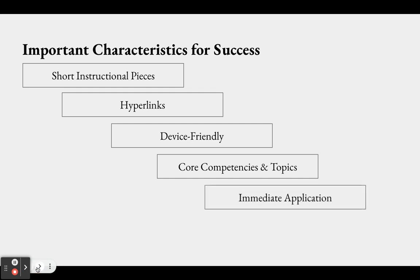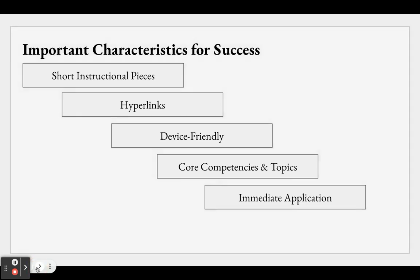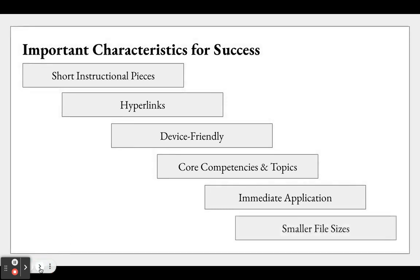Immediate application is also key — the learner or user should have an immediate opportunity to apply the knowledge. For example, if there's a quick tutorial on how to follow a step on your website or course, that should be directly above where the learner is actually going to do that, so they can immediately apply it and not have to go search to apply it. And finally, smaller file sizes — everything accessed through micro instruction should be very small files; otherwise it can take too long to download and may require technological advantages that not every person has.